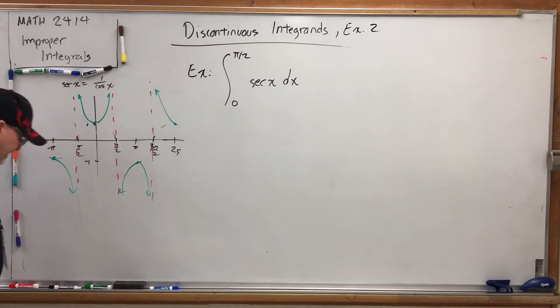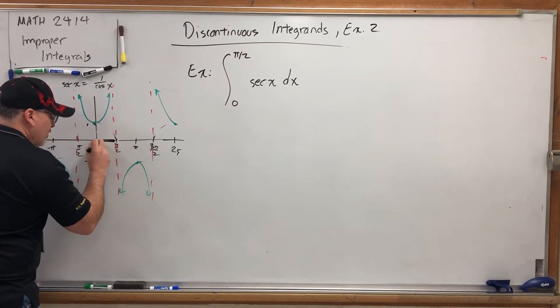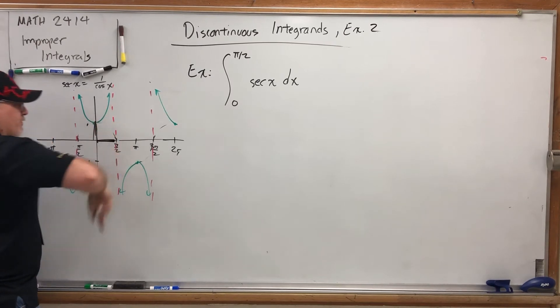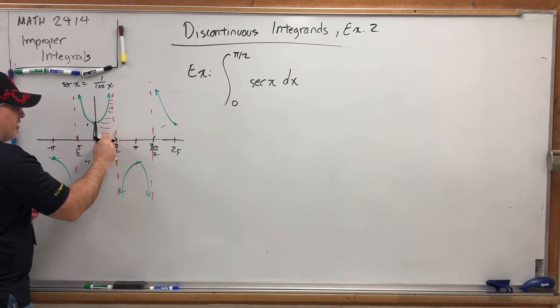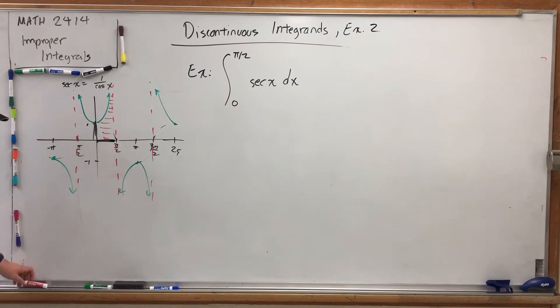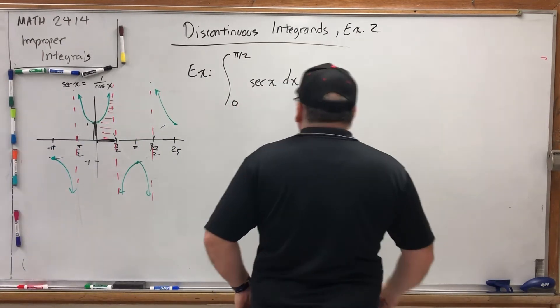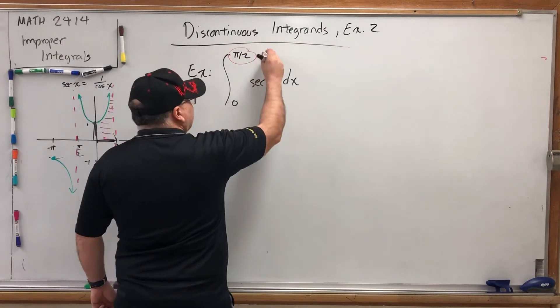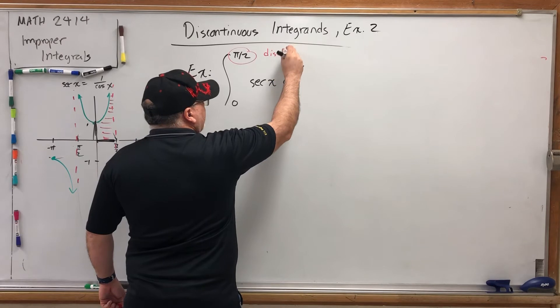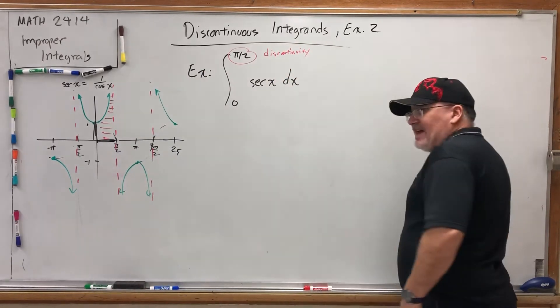So here's the graph of secant, and more importantly, we're integrating it from 0 to π over 2. So we're integrating it over this interval. 0 is not the problem, but π over 2 is. We're basically being asked, what is this area? Does it converge, and if it does, what does it converge to? So π over 2 is the culprit here. He's the guy that is making secant. This is a discontinuity. All right, so let's tackle it.